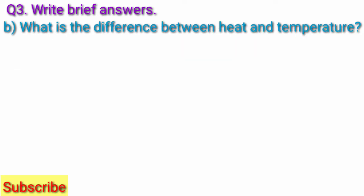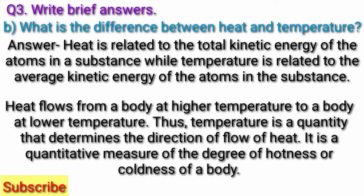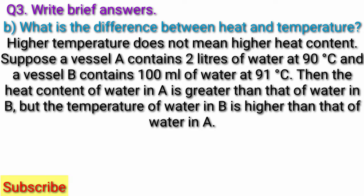Question 3B: What is the difference between heat and temperature? Answer: Heat is related to the total kinetic energy of the atoms in a substance, while temperature is related to the average kinetic energy of the atoms in the substance. Heat flows from a body at higher temperature to a body at lower temperature. Thus, temperature is a quantity that determines the direction of flow of heat. It is a quantitative measure of the degree of hotness or coldness of a body. Higher temperature does not mean higher heat content.